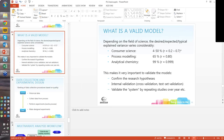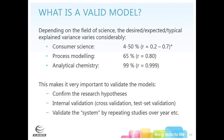What constitutes a valid model depends greatly on your field. In consumer science studying people, you can get away with errors and R-squareds that are much lower than in analytical chemistry. For process modeling, an R of about 0.8 is doing really well. In analytical chemistry and pharmaceuticals, you're looking above 0.9 often. You have to determine acceptable performance before going in — you need to decide what you're willing to accept.